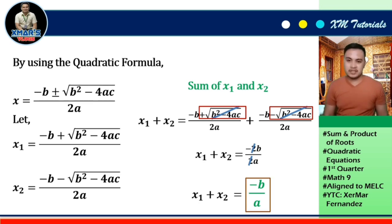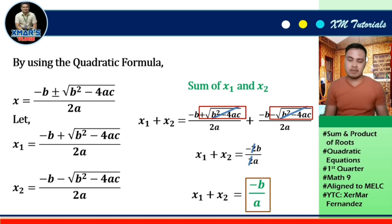So, what can you say about the sum of the roots of a quadratic equation in relation to its coefficients? Based on the result, the sum of the roots of the quadratic equation is the negation of b over the value of a, that is, -b/a.